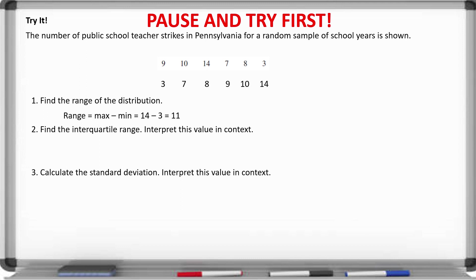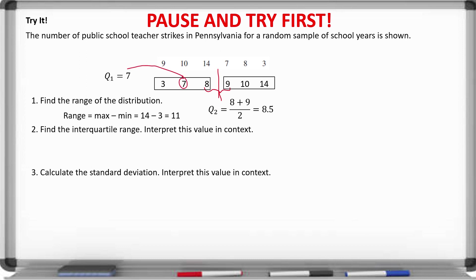To find the interquartile range, sort the data from smallest to largest. Find the median first — there are two middle numbers, 8 and 9, so we take their average: 8 plus 9 divided by 2 is 8.5. The data splits into two halves, each with three values. The median of the left side is 7, so the first quartile is 7. The median of the right half is 10, so the third quartile is 10. The IQR is Q3 minus Q1: 10 minus 7 equals 3.